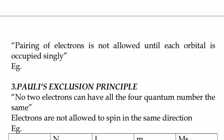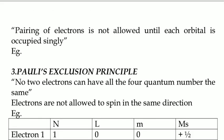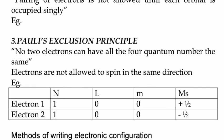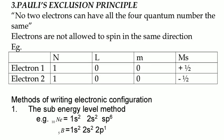For the Pauli Exclusion Principle: no two electrons can have all four quantum numbers the same. In other words, electrons are not allowed to spin in the same direction. You can't draw all the electrons pointing in one side — they must alternate because of the positive and negative magnetic quantum numbers.